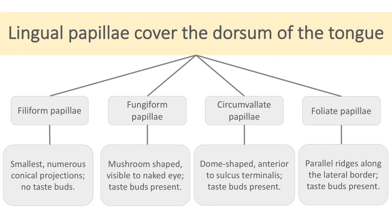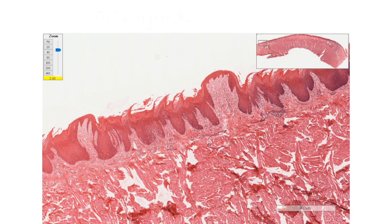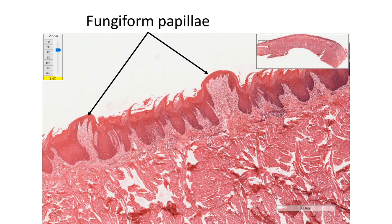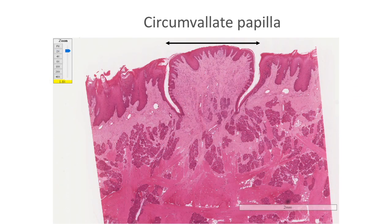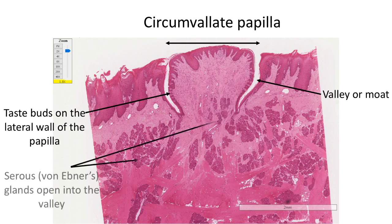While filiform papillae do not have taste buds, the remaining three types show taste buds on their surface. Under the microscope, filiform papillae appear as conical projections, while fungiform papillae are visible as mushroom-shaped structures. The circumvallate papillae are surrounded by a valley or moat — that is why the name circumvallate. The lateral wall of the circumvallate papillae shows taste buds, and multiple serous salivary glands (lingual salivary glands or von Ebner's glands) open into the floor of this valley.